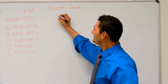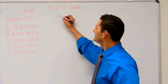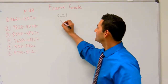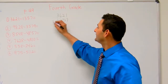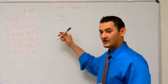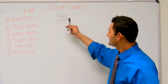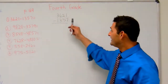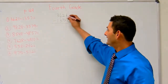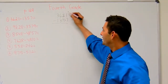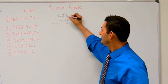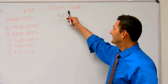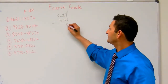Here I've got 3,621 minus 1,357. Start with the 1's place. 1 minus 7 — can't do that. Let's borrow 10 from the 10's place. So that will become a 1, and that will become 11. 11 minus 7 is 4.